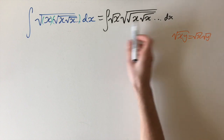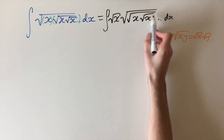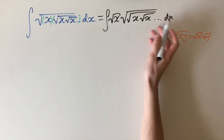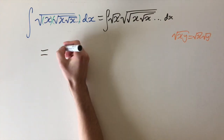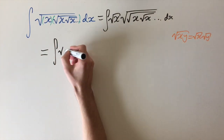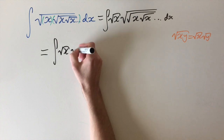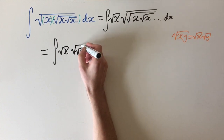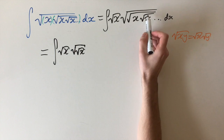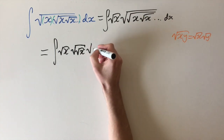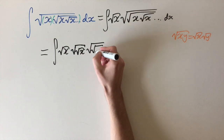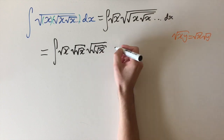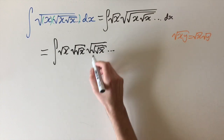We can iterate this whole process, applying this rule inside the inner square roots and factoring out. This gives us the integral of the square root of x times the square root of the square root of x — that's two square roots for the second term. For the third term it's the same except we have three square roots, and for the fourth term four square roots, and this carries on into infinity.